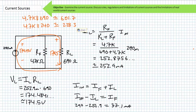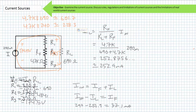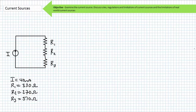Is it just me, or does circuit analysis with current sources seem suspiciously easy? If you've got a solid understanding of Ohm's law and can make use of the CDR shortcut, it really is this easy. Keep in mind that current sources aren't exclusively limited to just pure parallel circuit analysis. They can be included in basic series circuits or more advanced series-parallel circuits.